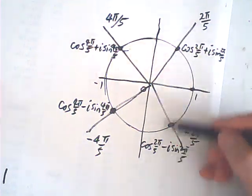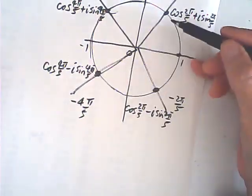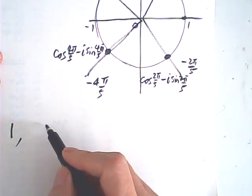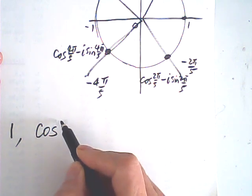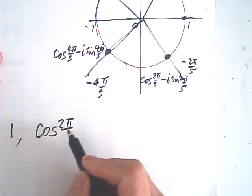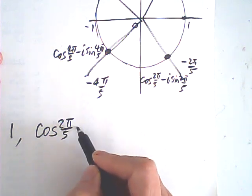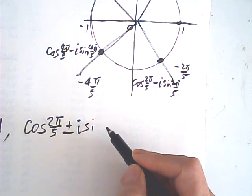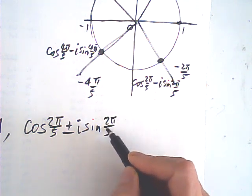And the other two, complex roots always come in conjugate pairs. So this is cosine 2 pi over 5 plus or minus i sine 2 pi over 5.